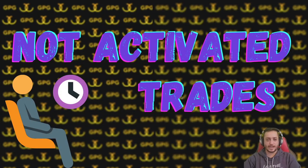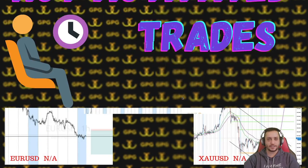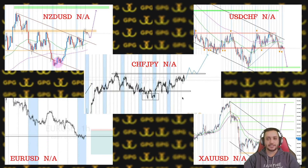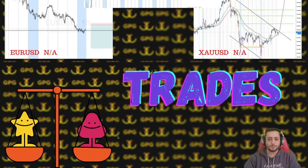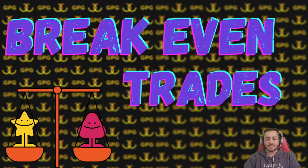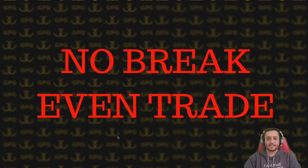As always, let's start with not-activated trades. We had NZD/USD, USD/CHF, EUR/USD, CHF/JPY, and XAU/USD which is gold. These were trades that were not activated due to the rules that we wanted to see before confirming the entry. Then we got to break-even trades — this time we had no break-even trades.